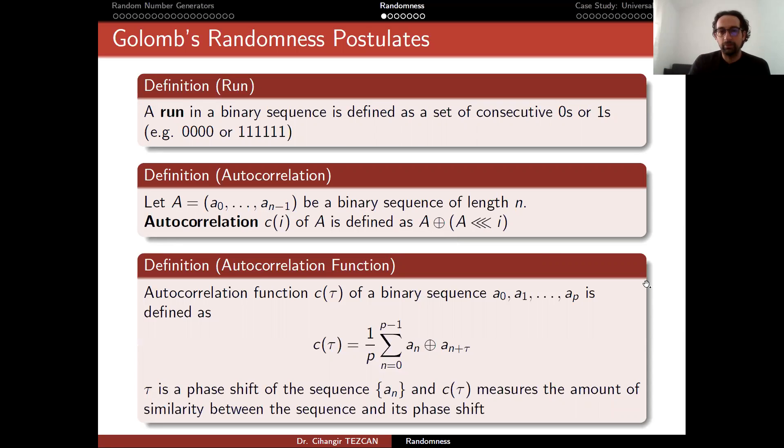Let's talk about autocorrelation function. Autocorrelation function c tau of a binary sequence is defined as follows. It is actually XOR itself, which is rotated. Each bit is XOR to tau next to it. So it is like the definition here.